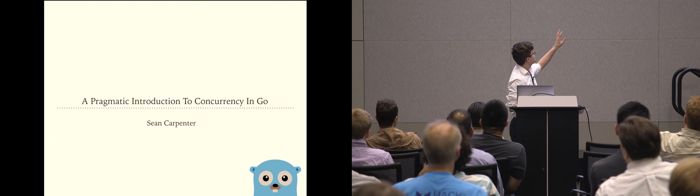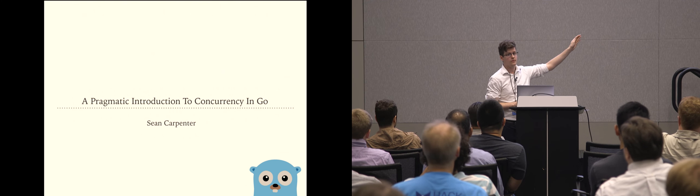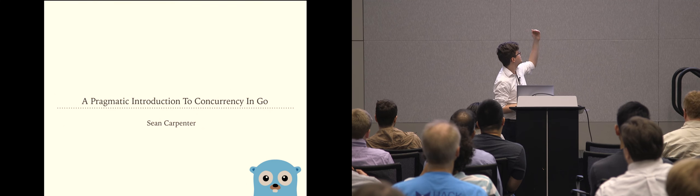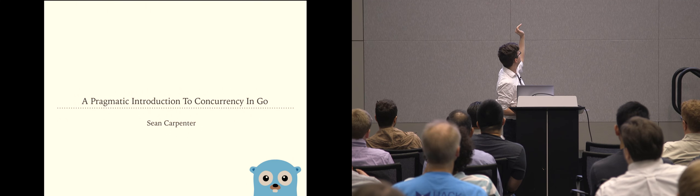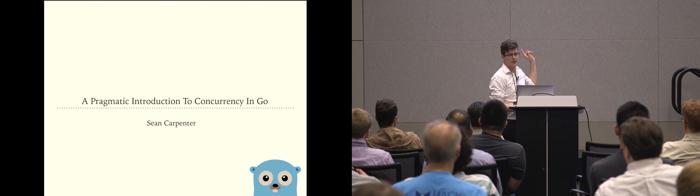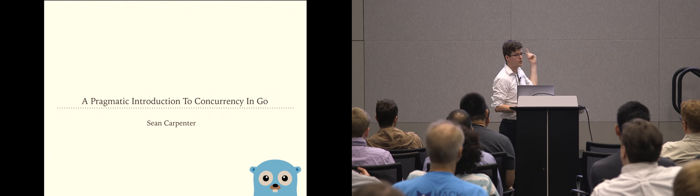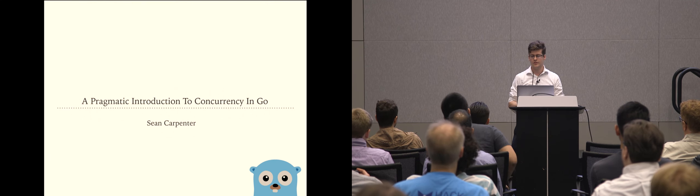It's kind of a wordy title, but to start off, we're going to go right to left. We're going to talk about Go a little bit — what it is, why it's used. We're going to talk a tiny bit about concurrency. And then lastly, we're going to go over a series of code samples that are going to demonstrate a lot of the core aspects of concurrency in Go, as Go is quite a good language for that.